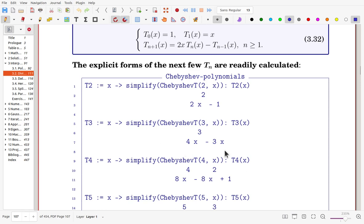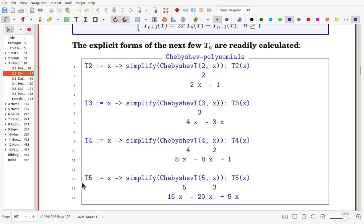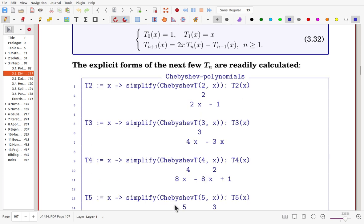And also one more thing you can observe is that for the leading coefficient: for T2 it's 2, and T3 leading coefficient is 4, and T4 leading coefficient is 8, which is 2^3, and T5, the leading coefficient is 2^4. So because of this 2 multiplication, it is happening.